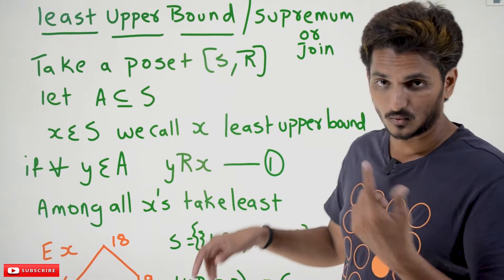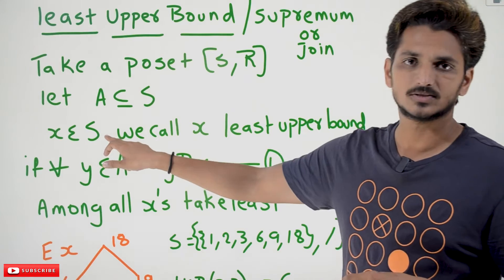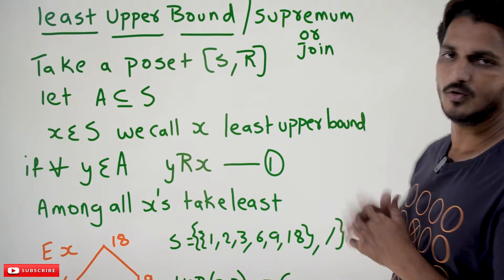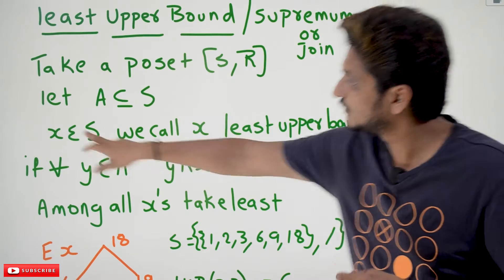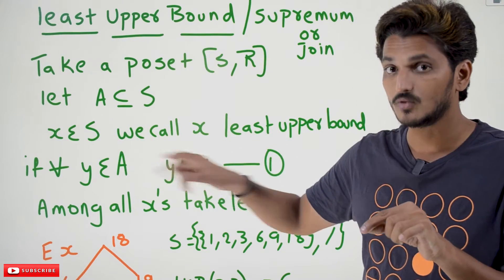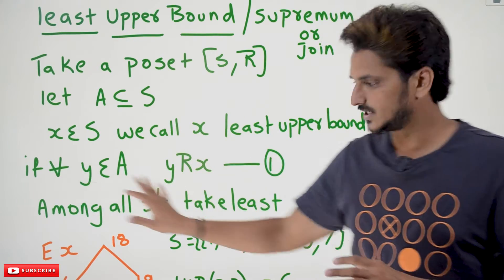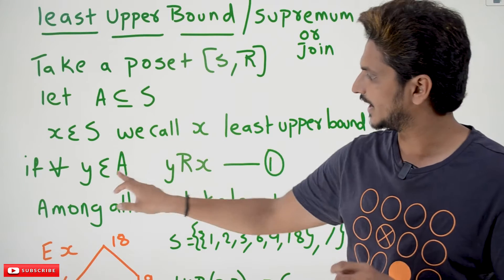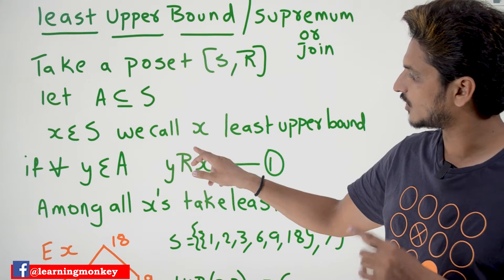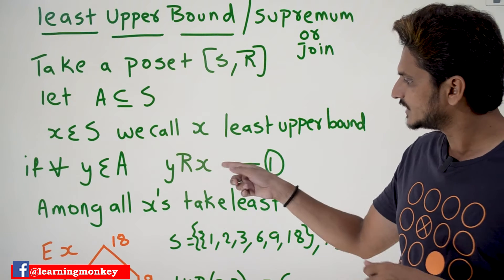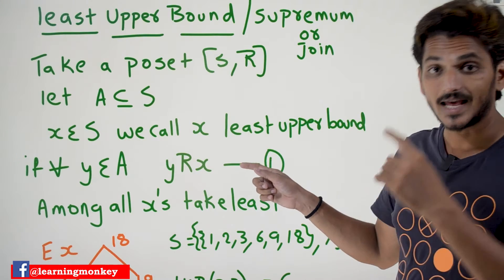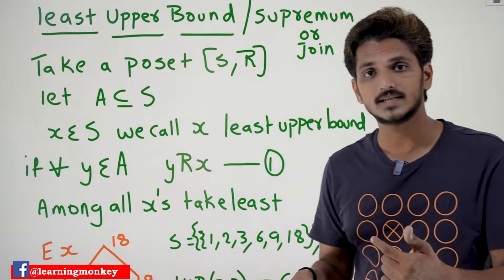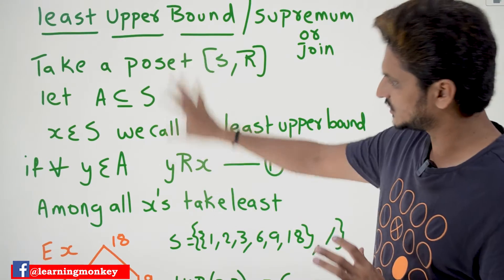When we want to find the Least Upper Bound, let X belong to S — take an element X that belongs to set S. We call X as Least Upper Bound if it satisfies two conditions. First condition: for all Y belonging to A, Y should form a relationship with X. Those elements we call Upper Bound elements. Second condition: among all those X's, take the least one. The least one we call the Least Upper Bound. With an example you will get clarity; just remember this definition.